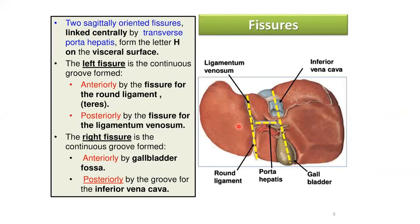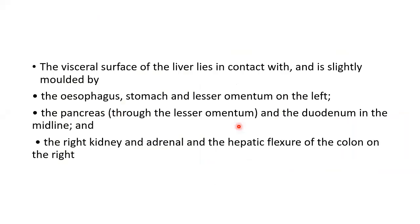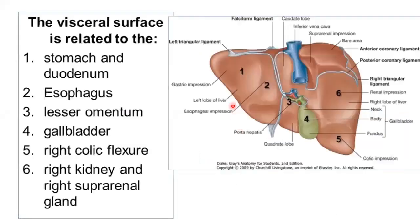The visceral surface of the liver lies in contact with and is slightly molded by the esophagus and stomach on the left side, the pancreas in the midline, and the right kidney, adrenal gland, and the hepatic flexure of the colon on the right side.